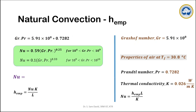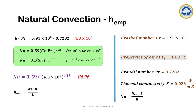The Prandtl number can be read directly from the data sheet without separate calculation. We then determine which empirical equation is suitable for our Nusselt number calculation. In our experiment, the product of the Prandtl number and Grashof number comes to 4.3 × 10⁸, which falls in the category of the first equation. Substituting all values, the Nusselt number comes to approximately 84.96. From the Nusselt number, we can calculate the empirical heat transfer coefficient.